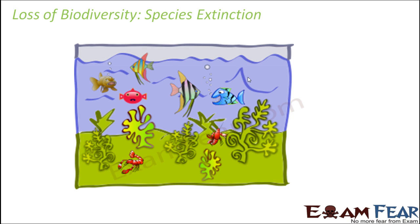This aquarium is like an ecosystem. Removing the fishes is under our control. So if you do not want the aquarium to become empty, you need to add fishes back to compensate for the ones being taken out, in order to balance their number.